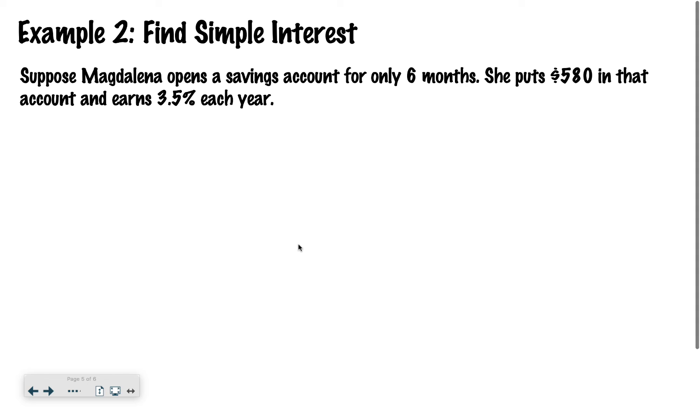Let's try another one. So we have suppose Magdalena opens a savings account for only six months. So you can see already right here, this is something less than a year. Well, I'll show you what that's going to look like. She put $580 into that account and earns 3.5% each year. So again, interest equals principal times the rate times time. So I equals 580. That's what she started with. My interest rate would be 0.035 times.